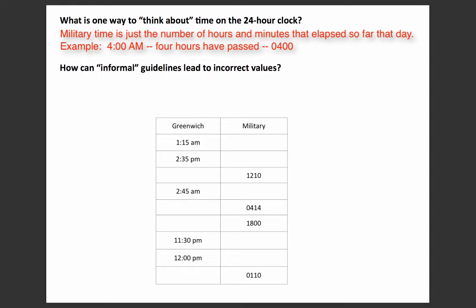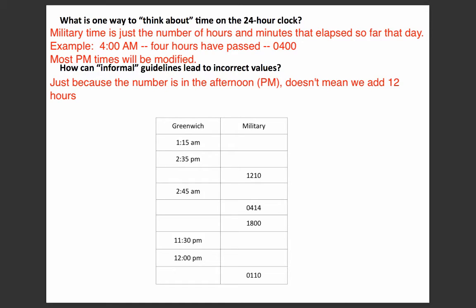Anything in the afternoon may change. One informal guideline is: if you see p.m., just add 12. For example, 2 p.m. — 12 hours have passed to noon, then two hours after noon gives us 1400. However, this can be misleading. Take noon, or 12 p.m. — that is a p.m. time, but we do not add 12 hours to that; it stays the same. It's from 1 p.m. onward, up to 11:59 p.m., where you add 12. So: if it's after 1 p.m., then add 12 hours to that time.